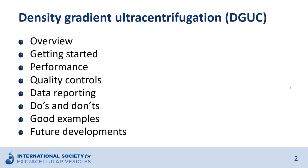First, I will give a general overview on density gradient ultracentrifugation — what it is and what it is used for. Thereafter, I will explain how to start with this method, how to check its performance, and which quality controls should be considered. Next, I will discuss the data reporting, the do's and don'ts, and some good examples reported in literature. Finally, I will give an outlook on some future developments.